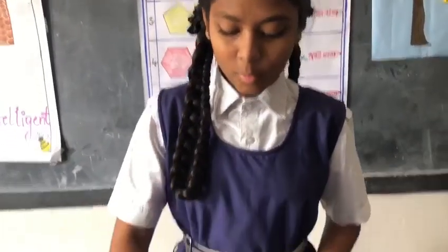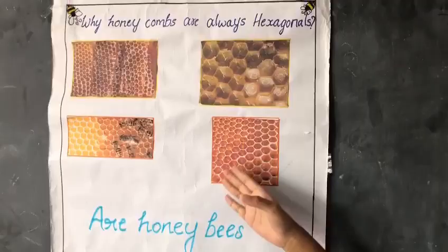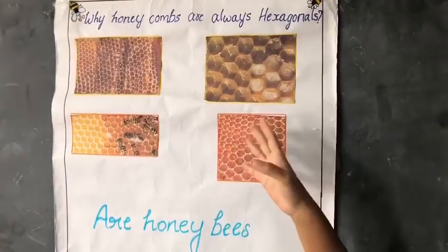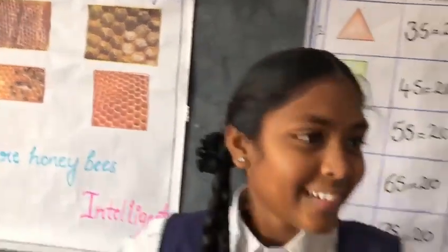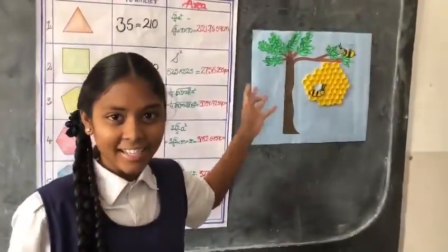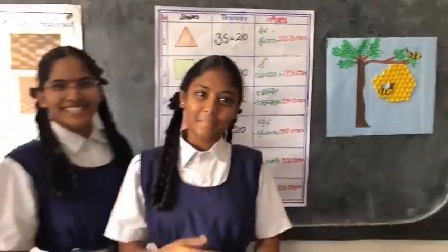Hexagons cover more area with the same perimeter and tessellate. In the arrangement, it has no gaps. Really, honeybees are very intelligent and amazing.